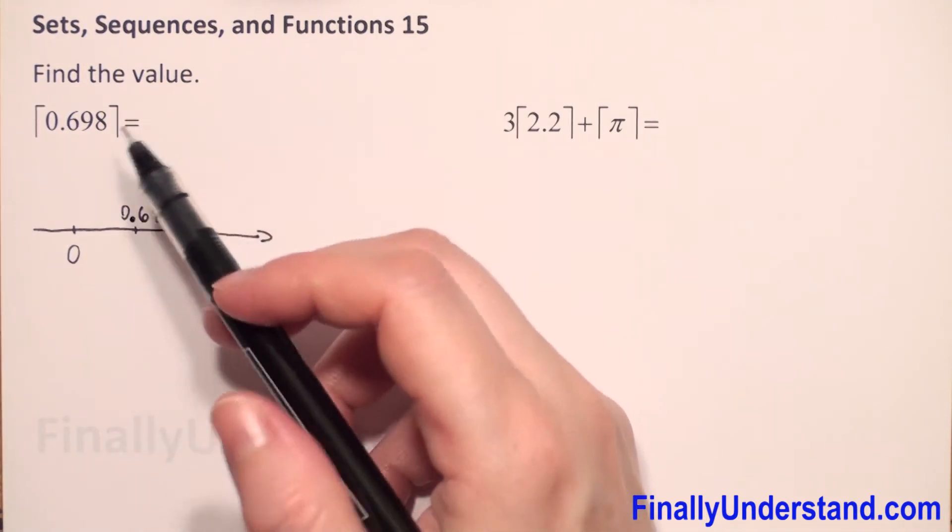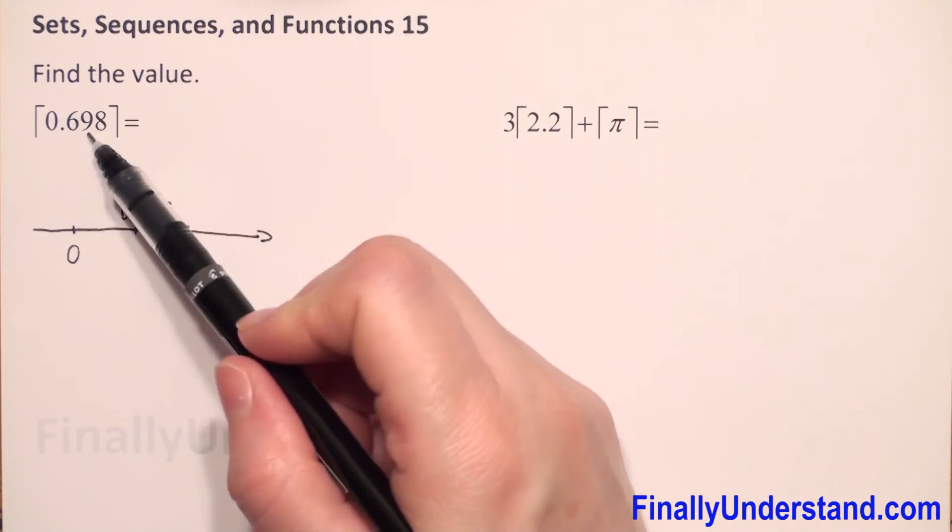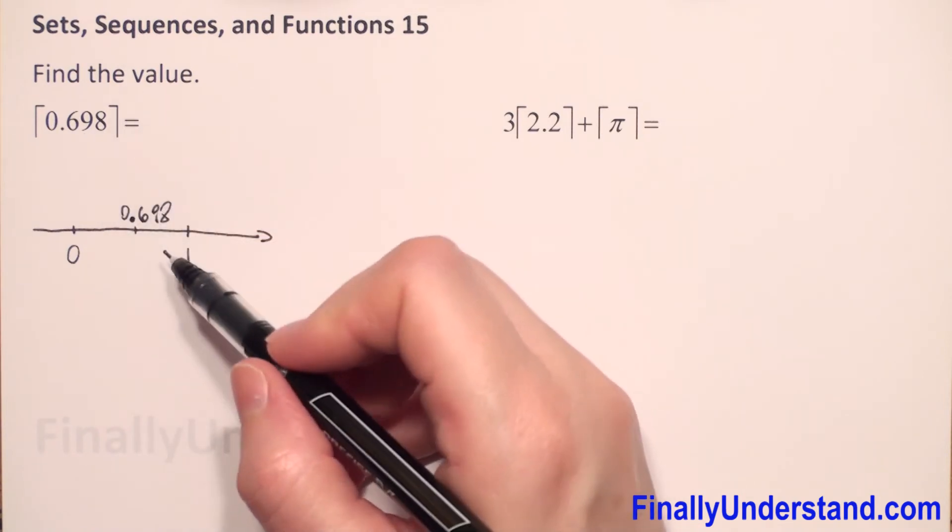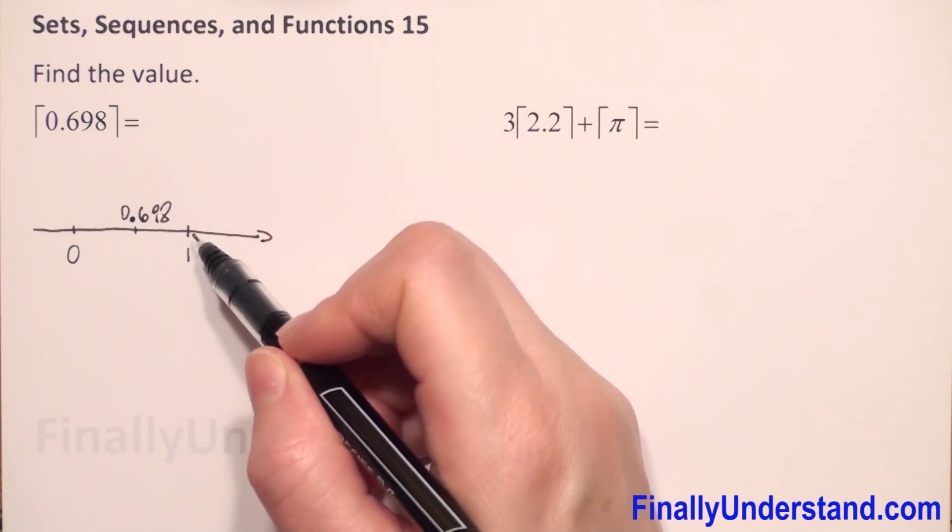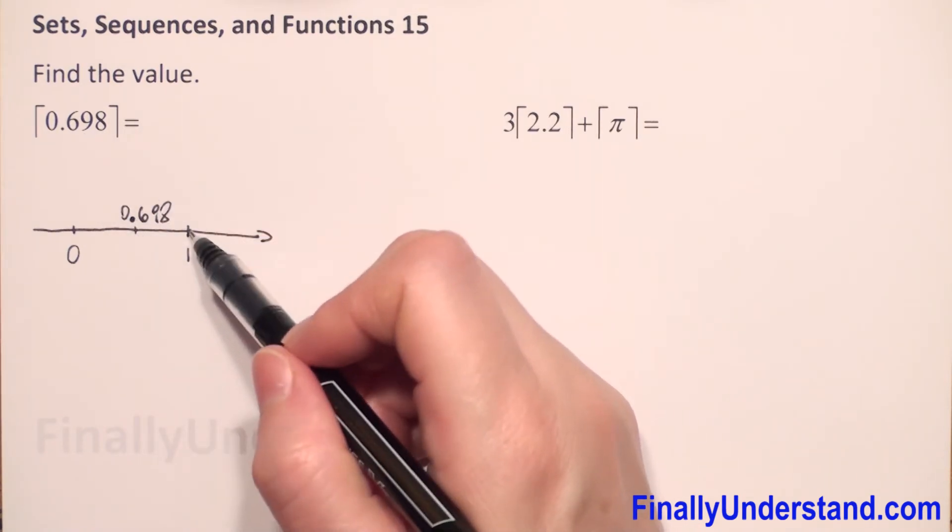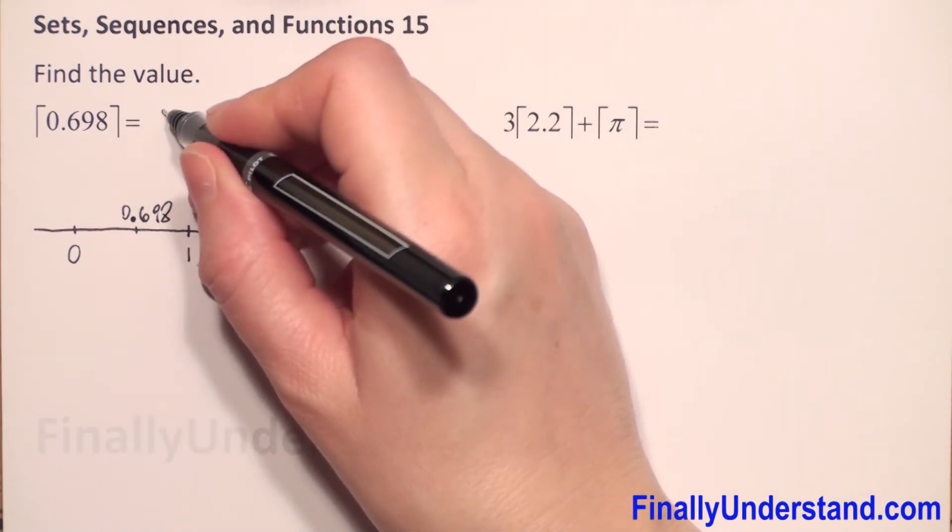Because this number is not integer, so the smallest integer will be 1. So, this is my solution.